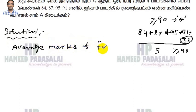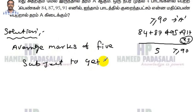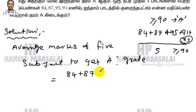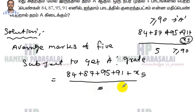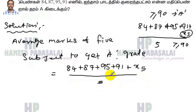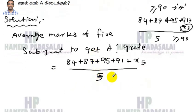Marks of 5 subjects to get a grade A. So the expression is: (84 + 87 + 95 + 91 + x5) divided by 5, greater than or equal to 90. Here 90 is the required average for a grade A.